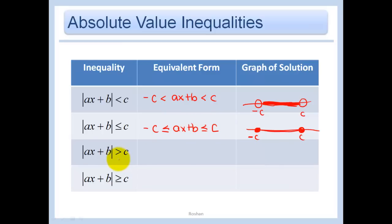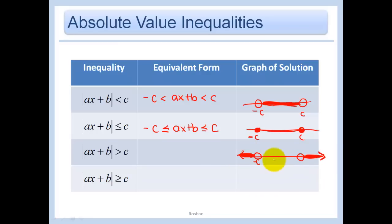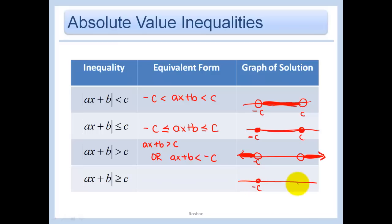If the absolute value of ax plus b is greater than c, that means the number is more than c units away — on either side. This is a case of 'or': either ax plus b is greater than c, or ax plus b is less than negative c. They don't intersect, so you connect them with 'or.' A helpful trick: 'greater' sounds like 'gr-or,' so greater than means 'or.' With greater than or equal to, you just use closed circles instead.